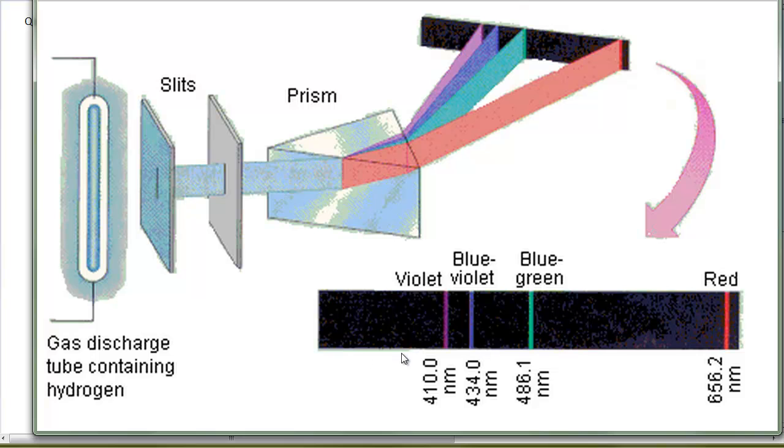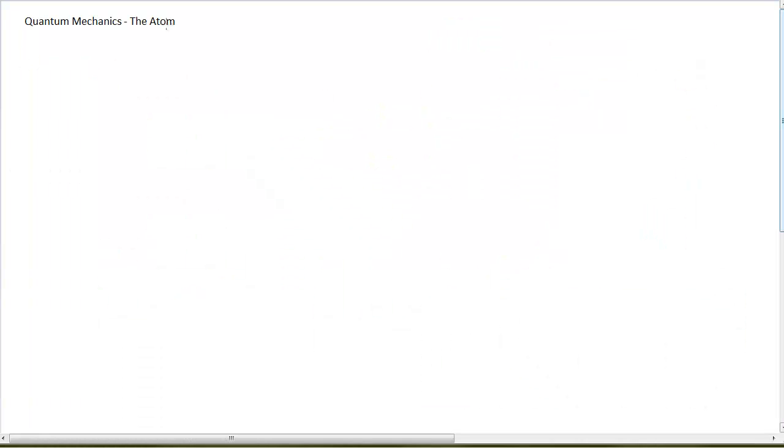And so scientists got curious, because we're a curious bunch, and said, okay, why do I see this purple line, and this greenish-blue line, and this red line, but nothing in between? And so they began trying to figure out, what does the atom look like, what's going on in the atom that gives me those pretty colors?